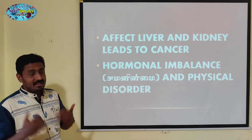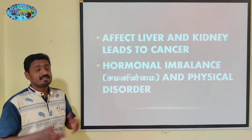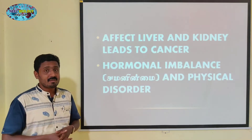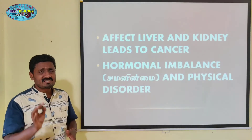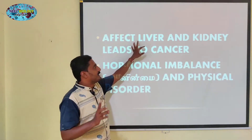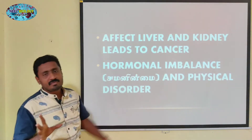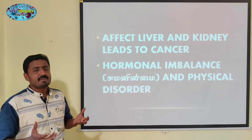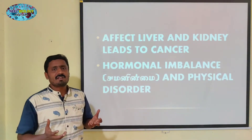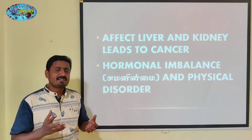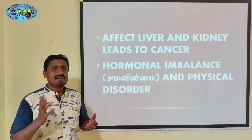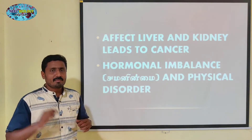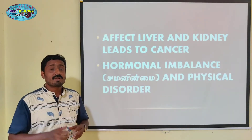If we introduce a chemical and toxic substances, the first organ affected is the liver, and the second is the kidney. They act as filtering agents in the body. The amount of blood filtered by our body passes through the liver. We can use some products from the liver and the body.